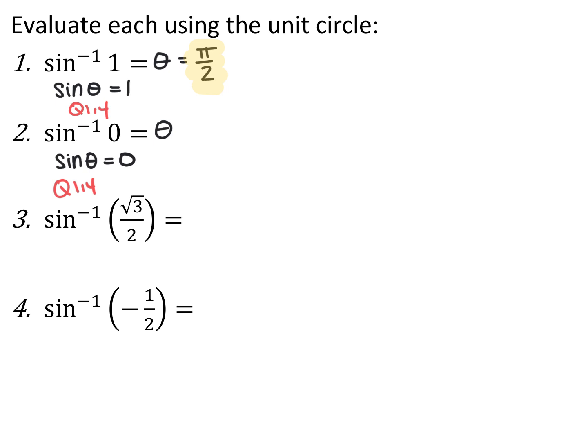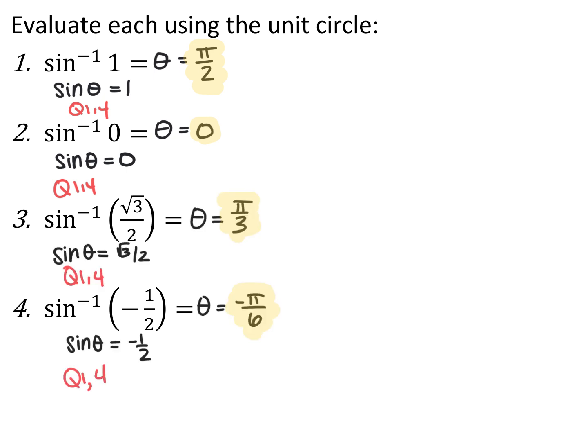Sine inverse of 0 is asking: what angle makes sine equal 0, specifically in quadrants 1 and 4? That would be the angle 0 radians. Sine inverse of root 3 over 2 asks: what angle in quadrants 1 and 4 has sine equal to root 3 over 2? Sine is positive in the first quadrant, so the answer is pi over 3. For sine inverse of negative 1 half, sine is negative in the fourth quadrant. Because the range is negative pi over 2 to pi over 2, we answer as negative pi over 6, not 11 pi over 6.